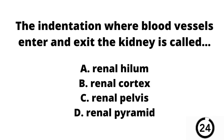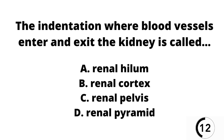Question number seven. The indentation where blood vessels enter and exit the kidney is called: A the renal hilum, B the renal cortex, C the renal pelvis, or D the renal pyramid?